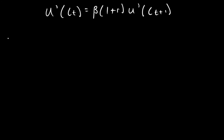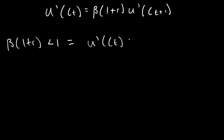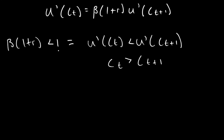Rather intuitively, when our rate of time preference relative to the interest rate is less than 1, the opposite case holds. The marginal utility of consumption in period 1 will be less than the marginal utility of consumption in period t plus 1, which means that consumption in period t is going to be greater than consumption in period t plus 1. So when beta(1+r) is less than 1, consumption in the first period is greater than consumption in the second period.